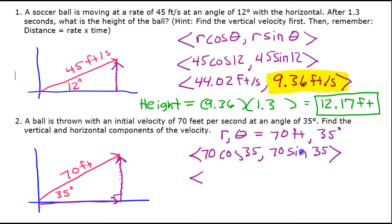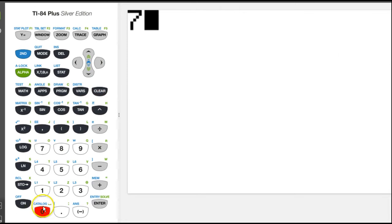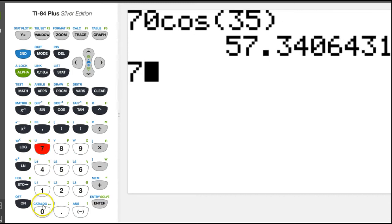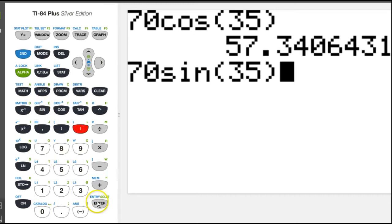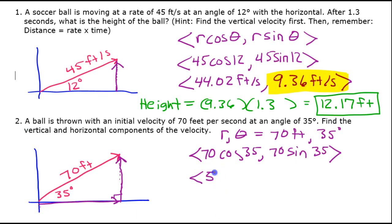So we can just evaluate that in our calculator. So 70 cosine 35. And 70 sine 35. And there you have it.